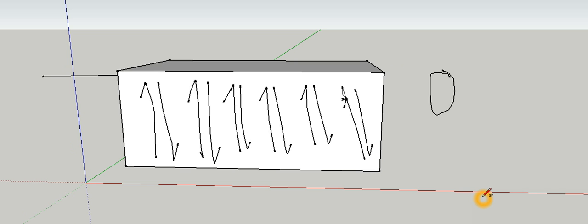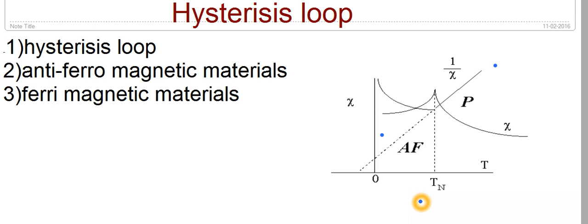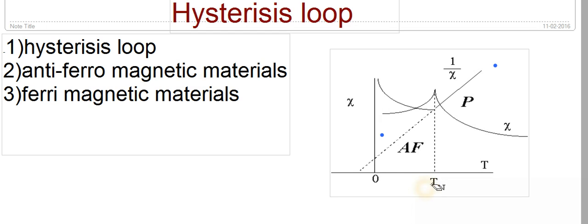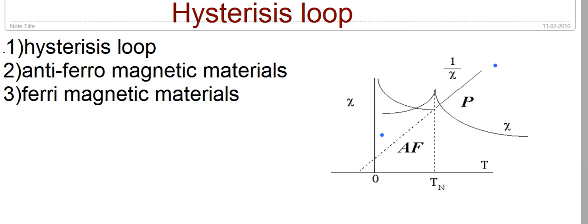Now we see how anti-ferromagnetic materials behave when the temperature is increased. These materials have positive susceptibility, and when the temperature is increased, the susceptibility increases and reaches a maximum value at a particular temperature called the Neel temperature T_N. After the Neel temperature, the susceptibility of the anti-ferromagnetic material decreases and the material becomes paramagnetic.